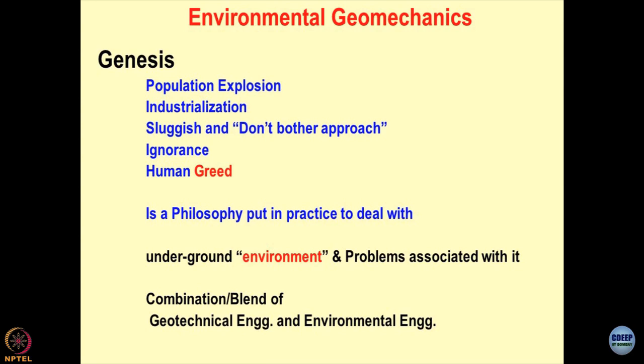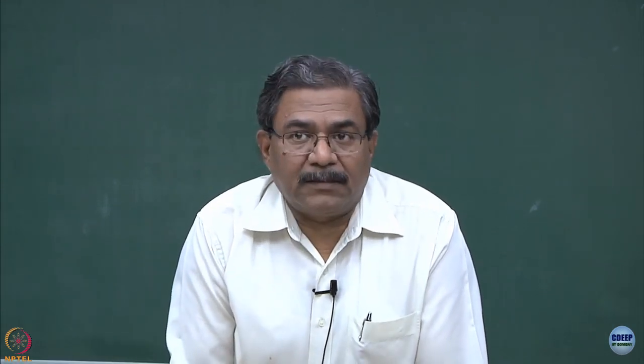This is what the sluggish, do-not-bother approach leads to — ignorance and lack of education. We do not know in what way our activities are going to affect the environment. Less training of the minds to preserve your environment might be an ignorance.